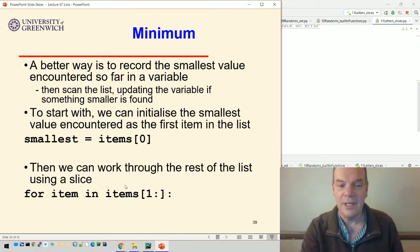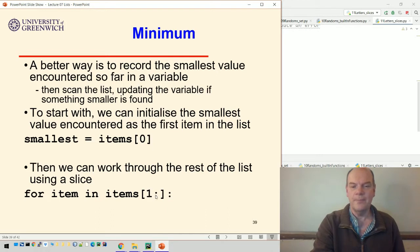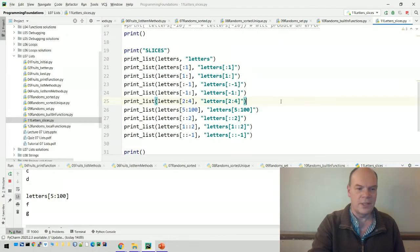So the way to make sure that you have something as the smallest value is to start with the smallest being the first item on the list. Then you can work through the rest of the list using a slice. So for item in items, going from item one up to the end and loop through the list like that. That will then generate the minimum.